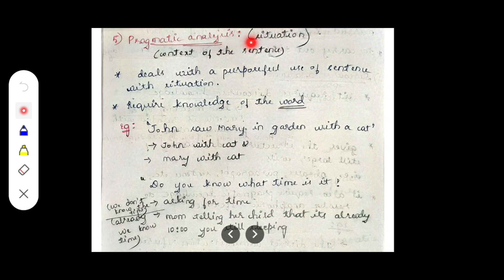This is what pragmatic analysis tells us — it tells about the situation. These are all five different levels of NLP. Please watch all the videos related to the different levels of NLP because it is very important and has appeared in previous year question papers a couple of times. Thank you so much for watching.